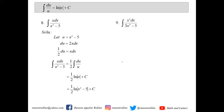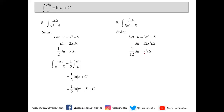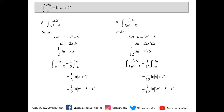Number 9: the integral of x³ dx over 3x⁴ minus 5. Let u equal 3x⁴ minus 5, so du equals 12x³ dx. Since we only have x³ dx, we multiply by one-twelfth: one-twelfth du equals x³ dx. By change of variable, the integral becomes one-twelfth times du over u, giving one-twelfth ln(3x⁴ − 5) plus c.